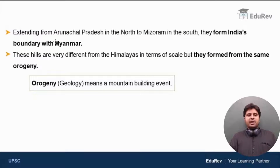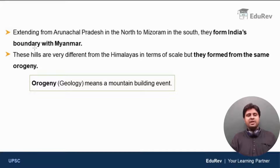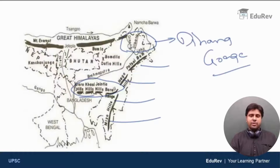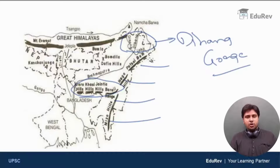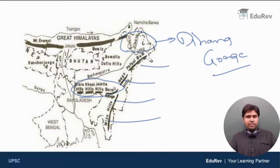Extending from Arunachal Pradesh in the north to Mizoram in the south, these hills form India's natural boundary with Myanmar.